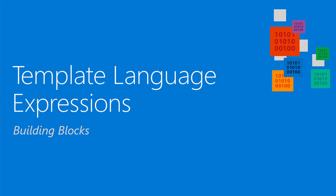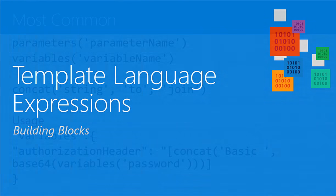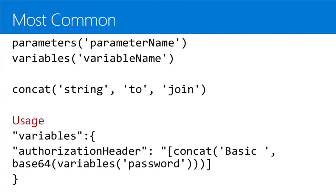Let's talk about template language expressions — the building blocks you'll work with when building ARM templates. We've already seen parameters and variables, which you'll use in every single template. Concat is a big one — just string concatenation — used a lot to build out different paths or resource IDs. A usage example: build an authorization header by concatenating a basic auth header with base64 encoding and pass variables into the base64 function.